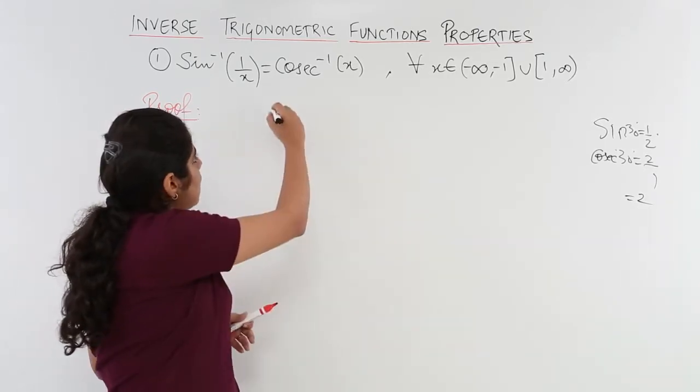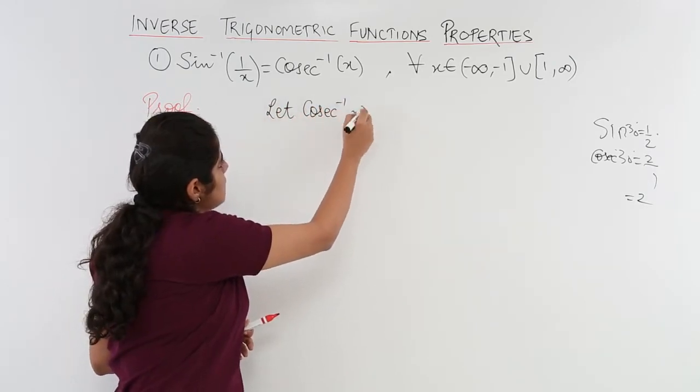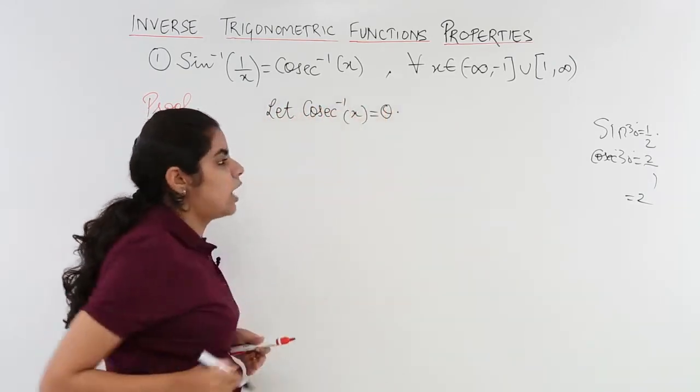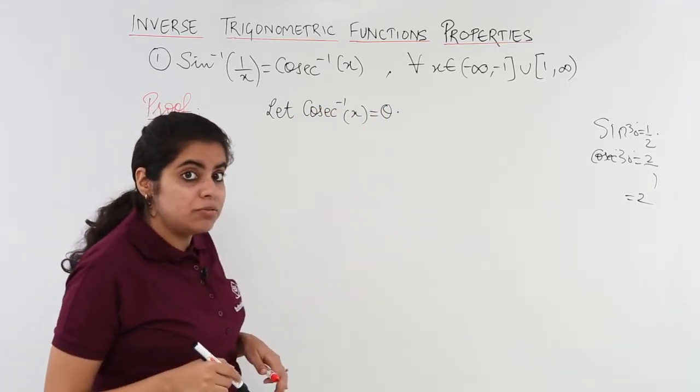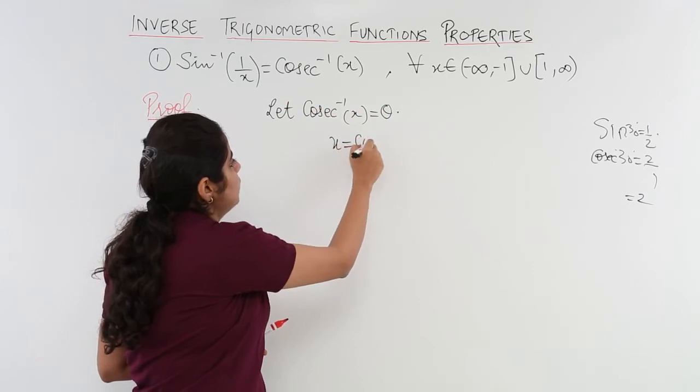Now let the proof. Let cosecant inverse x is equal to theta. If cosecant inverse x is equal to theta, what do you mean by that? It means x is equal to cosecant theta.